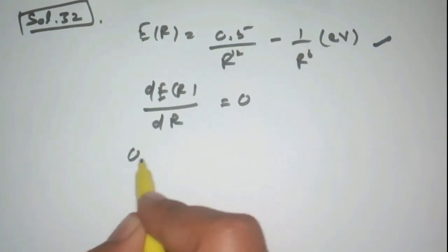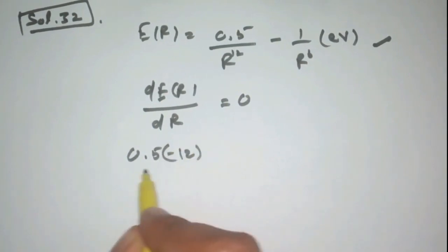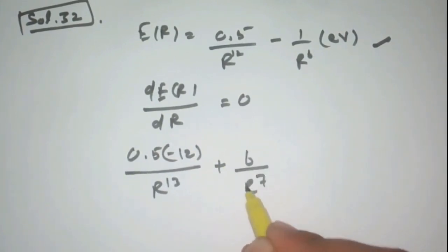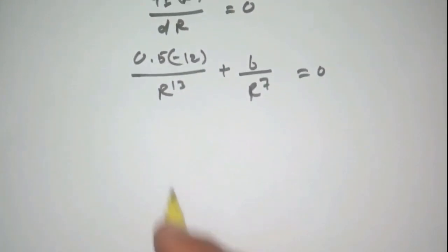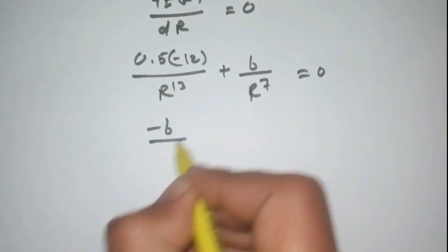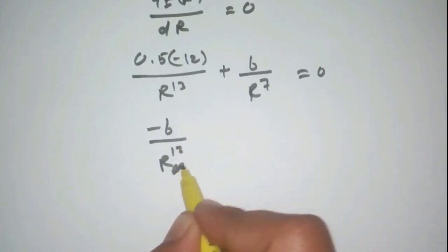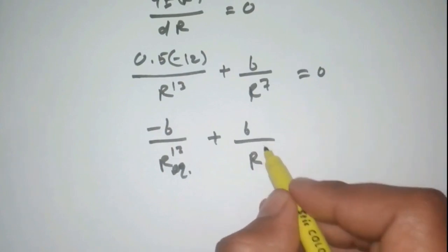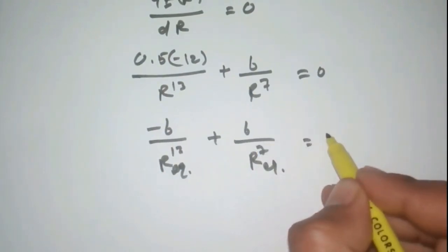And you will get 0.5 times 12 upon R^13 plus 6 upon R^7 equal to 0. So it becomes minus 6 upon R^13 plus 6 upon R^7 equal to 0.